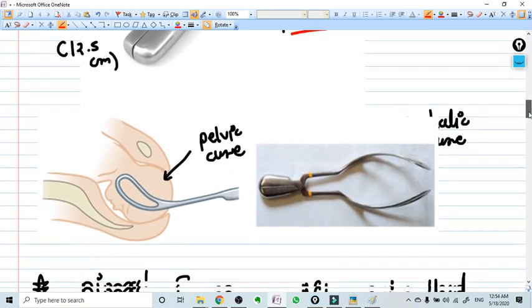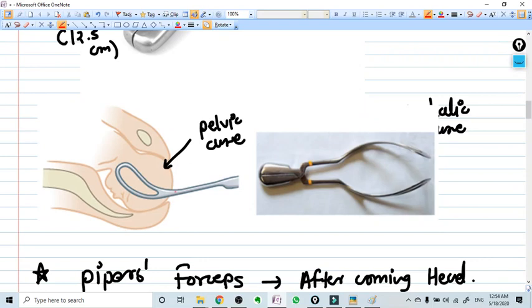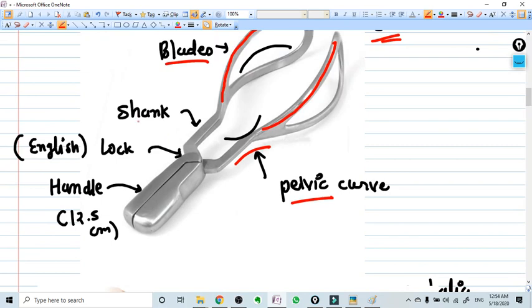This is how you hold the forceps in reality, so the pelvic curve is here. Now these are the shanks and these are the handles. This thing is a lock, the English type of lock is there for anyone who can ask in viva or like that.